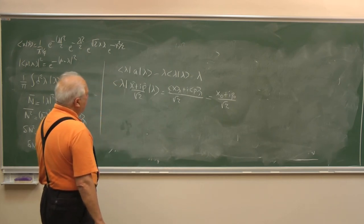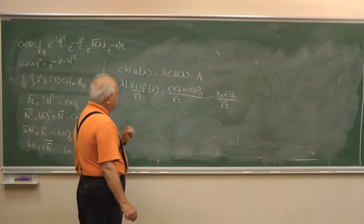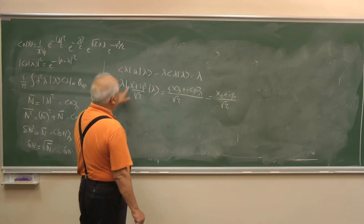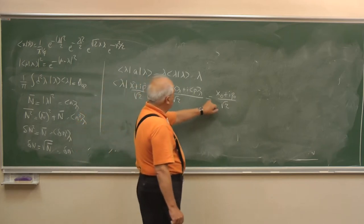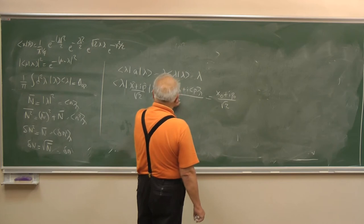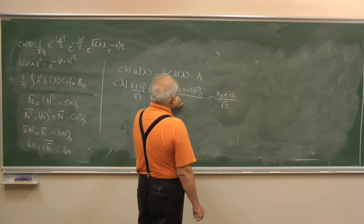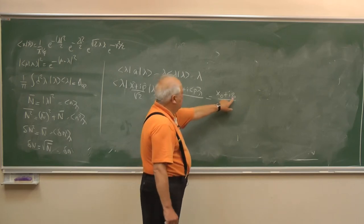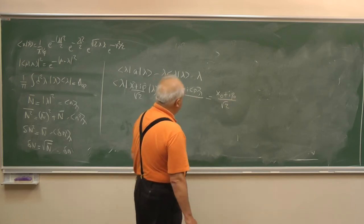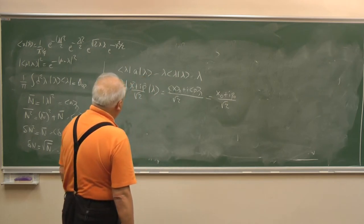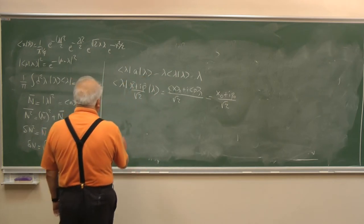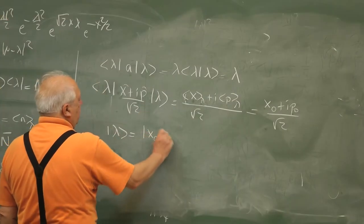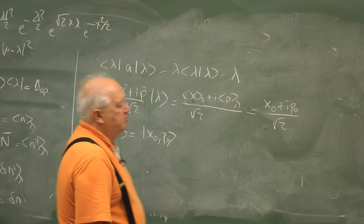So λ was a complex number, but it has a physical meaning. Because its real part is, except for 1/√2, the expectation value of the X operator in the state λ, or in the wave packet λ. And this P₀ is the expectation value of P. So these states |λ⟩ we can also write as |X₀, P₀⟩.